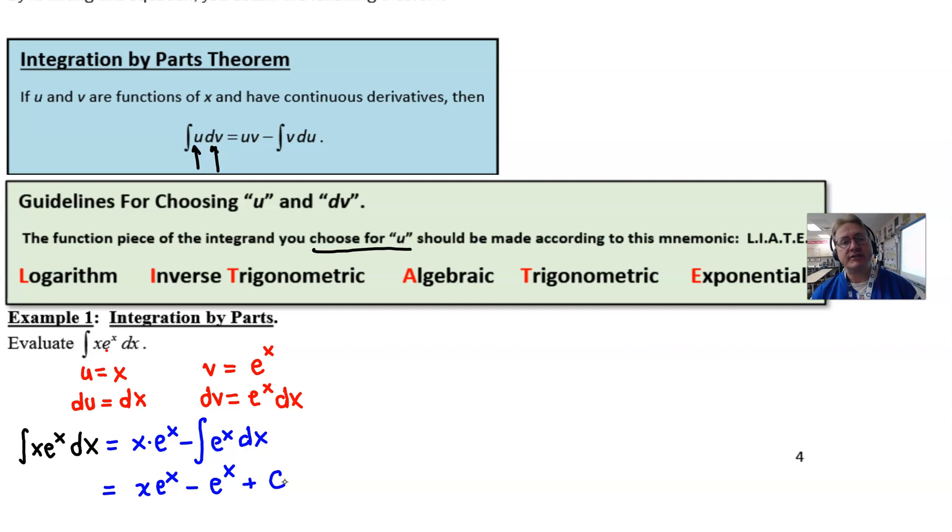But that is one way that you could certainly check this answer. Another way, maybe it's one way that you probably aren't too excited about, is you could take the derivative of this entire expression. You'd have to use a product rule for this first part. But doing that would simplify, ultimately, to give you this integrand back. So that's a way that you could check an answer without using a calculator. Let's say if you had a little extra time on an assessment and if you weren't quite sure. But in a nutshell, this is it. This is what the integration by parts looks like. This is a very simple example, of course.